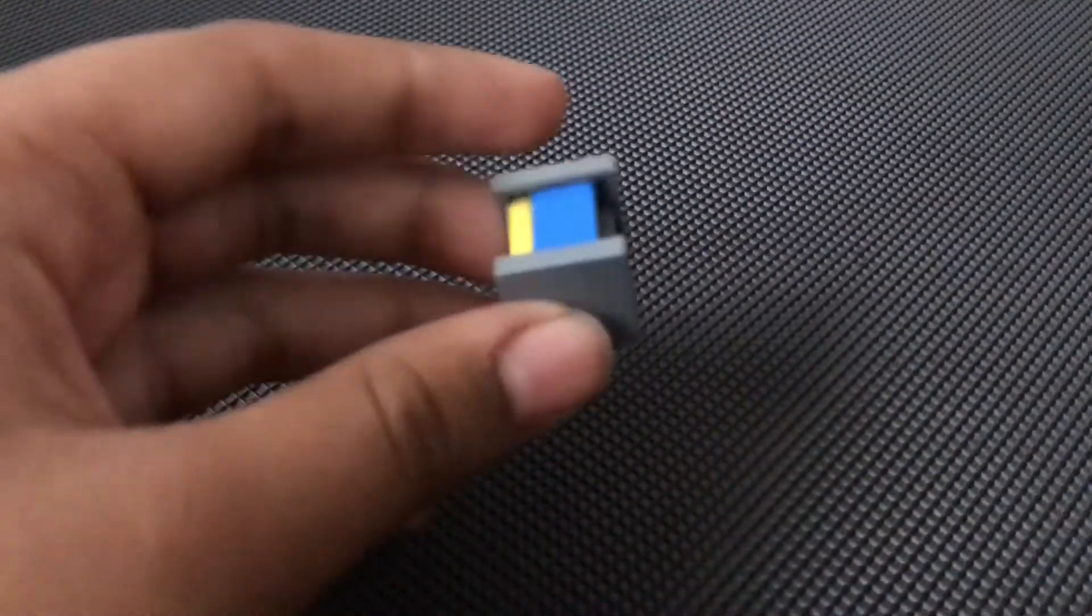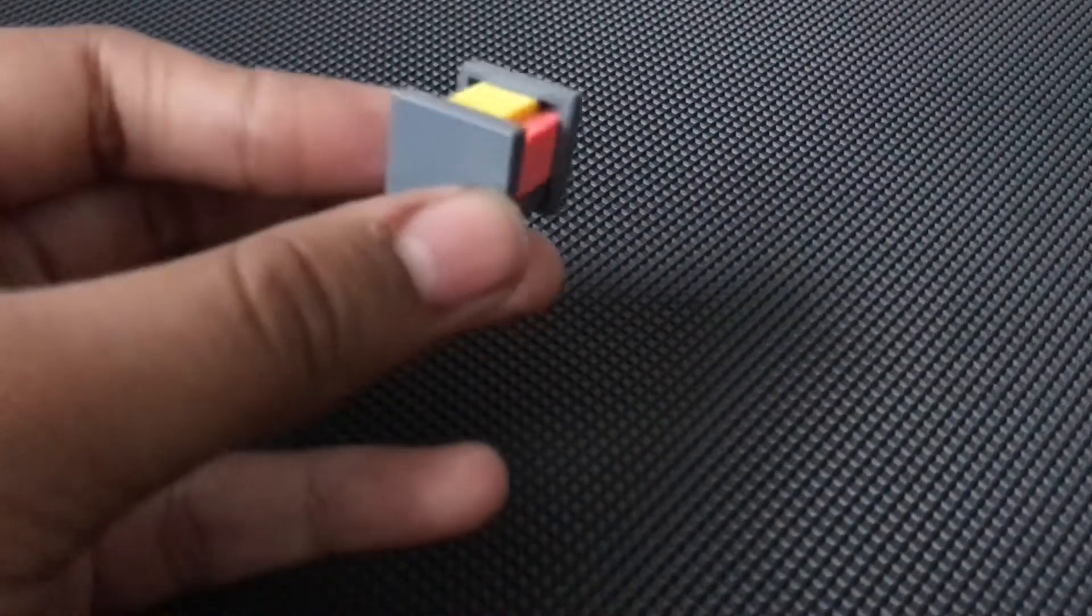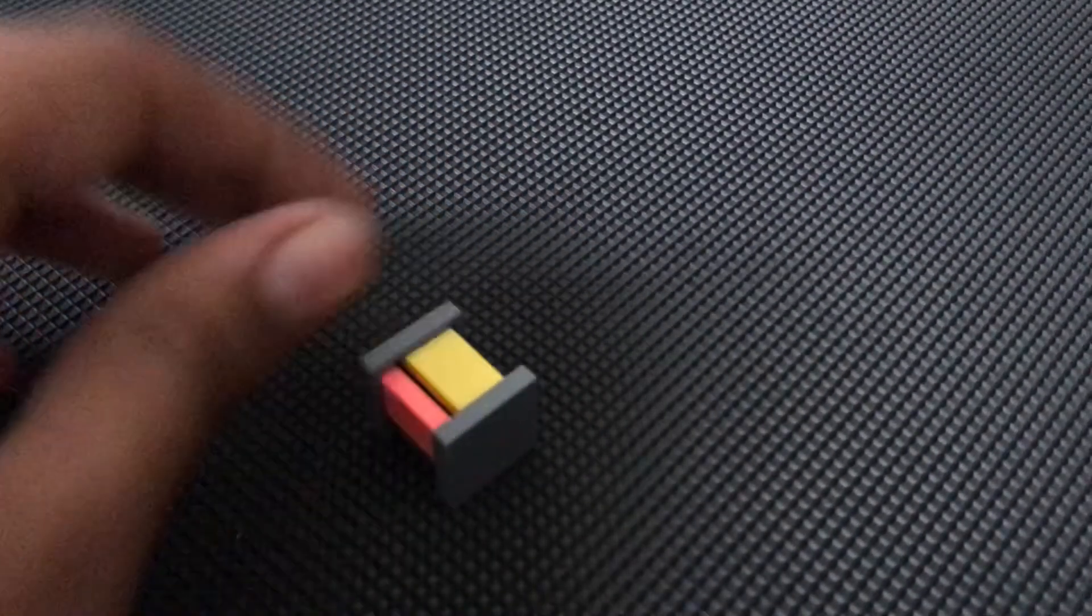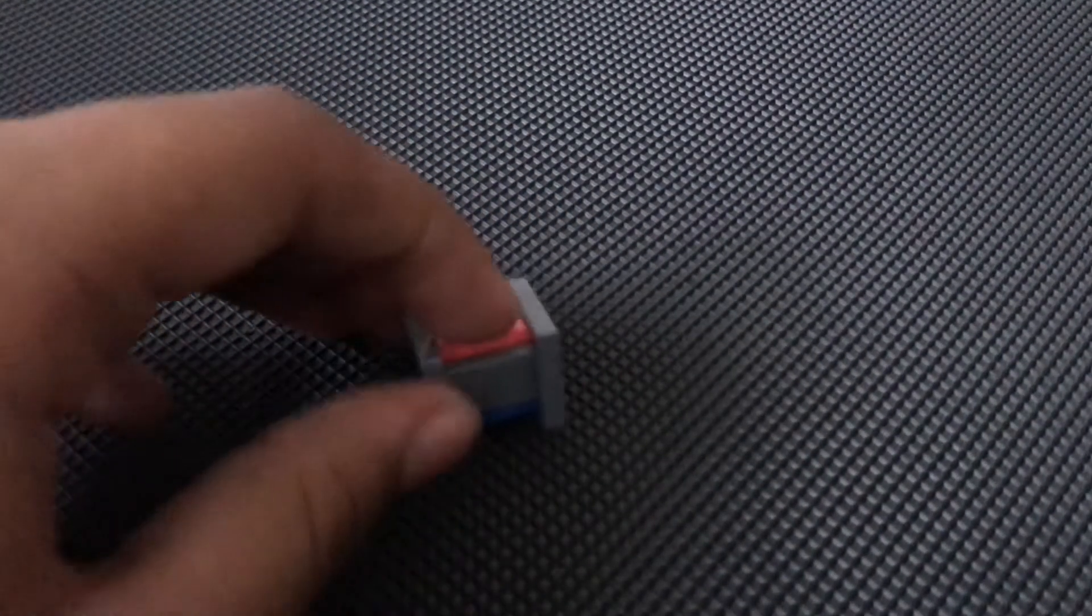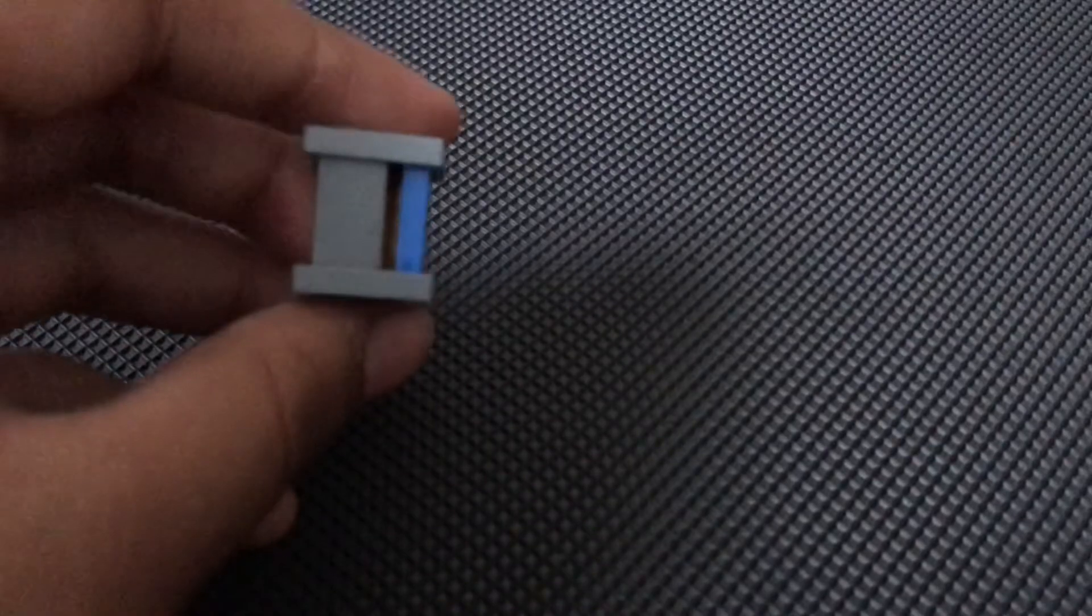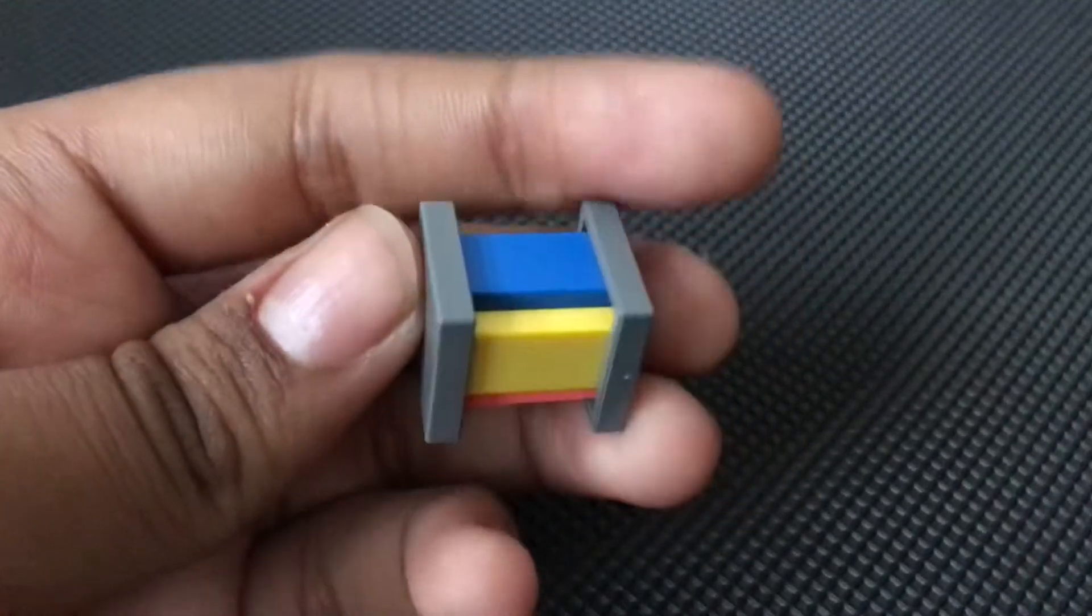Next, we have this. This is two plates, these two gray plates. And then in the middle, we have lots of 1x2 tiles. It makes this formation, and we have an illegal building technique.